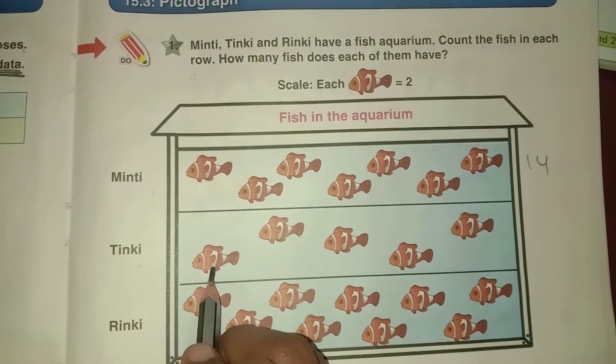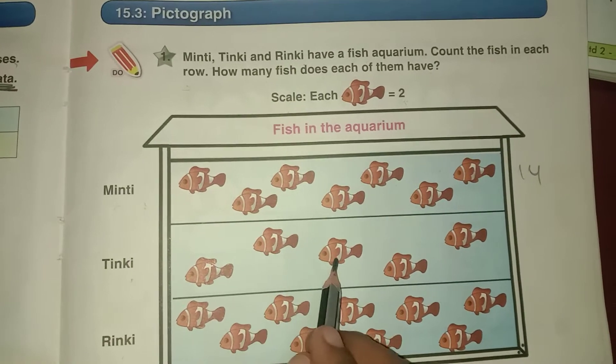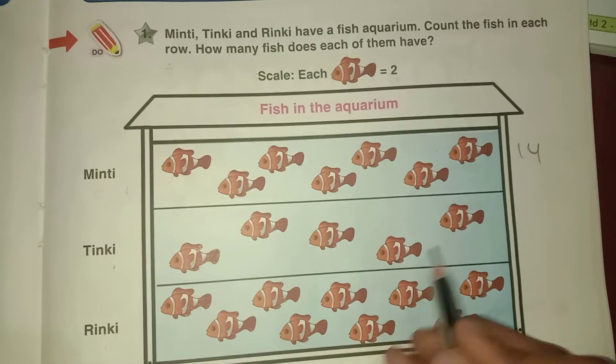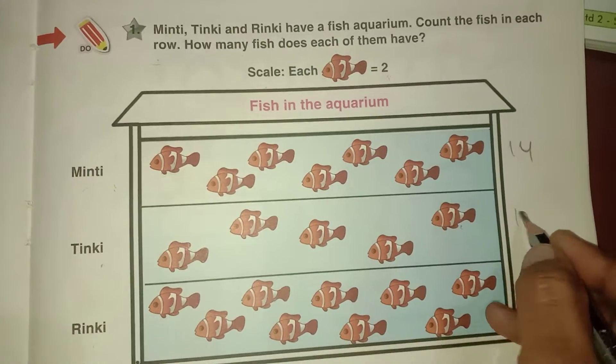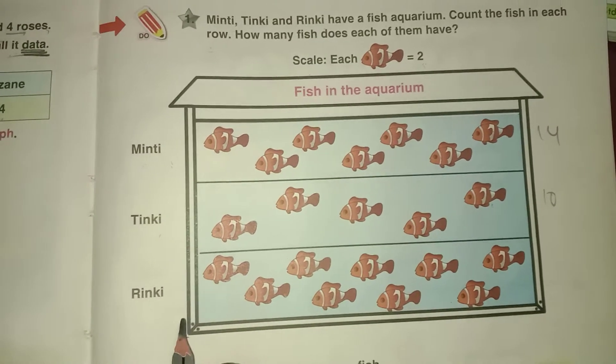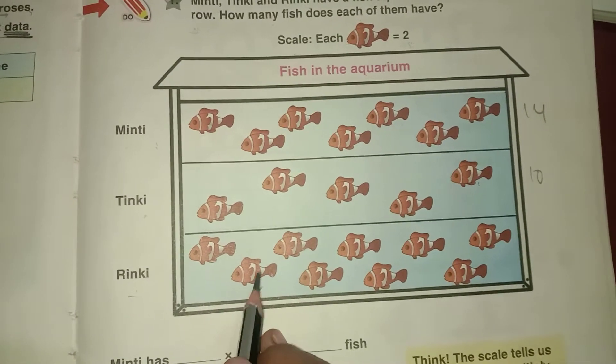And Tinky, 2 plus 2 is 4, 4 plus 2 is 6, 6 plus 2 is 8, 8 plus 2 is 10, 10 plus 2 is 12.